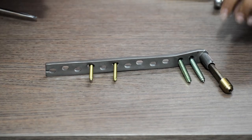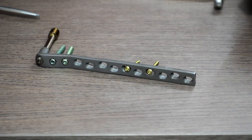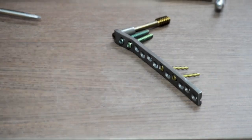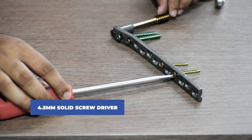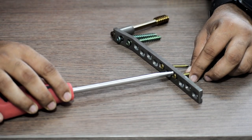Now let us understand the removal process of this plate. Firstly we will use a 4.5 mm solid screwdriver and remove all the screws one by one.